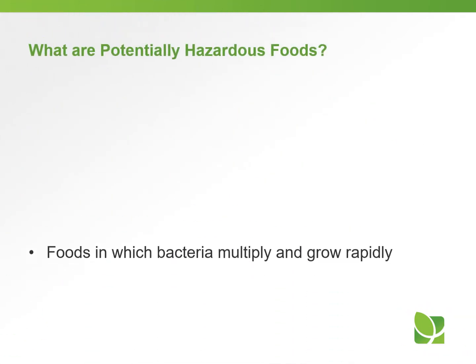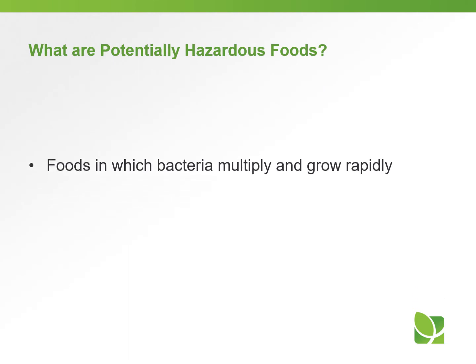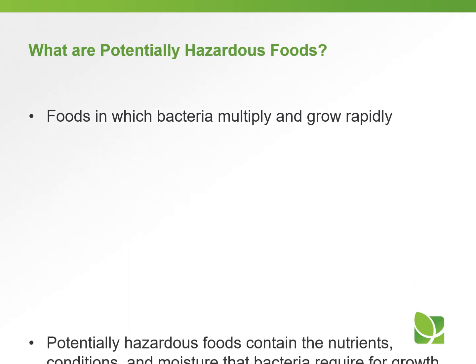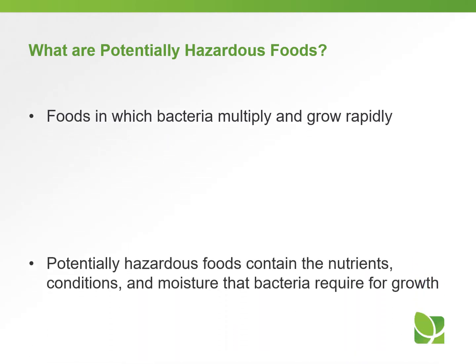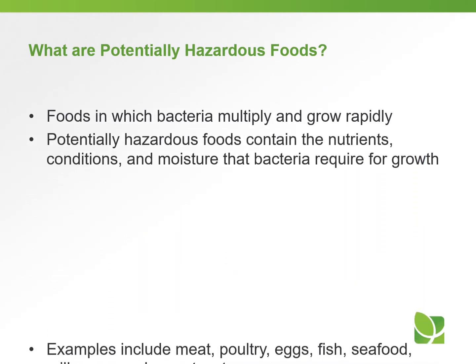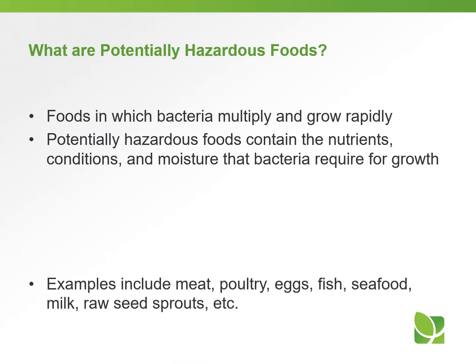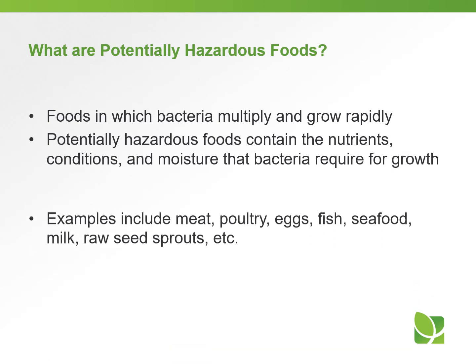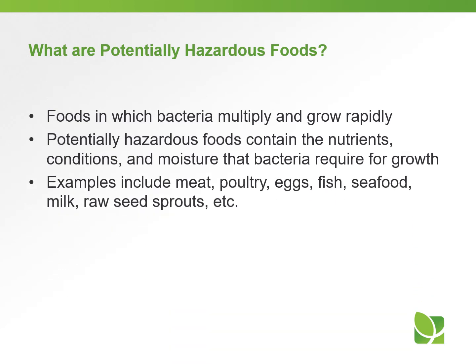Potentially hazardous foods are foods in which bacteria multiply and grow rapidly. They contain the nutrients, conditions, and moisture that bacteria need for growing. Examples include meat, poultry, eggs, fish, seafood, milk, raw seed sprouts, and melons.